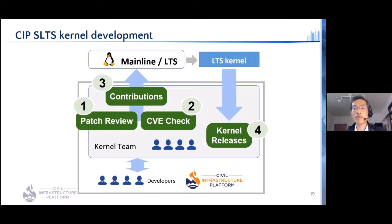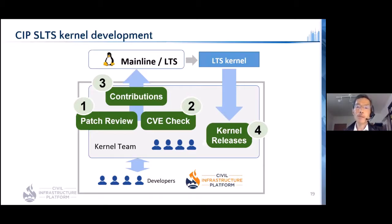For that objective, the team monitors stable releases carefully and contributes to them where needed. In general, patches are committed to mainline first, then backported to each stable kernel. However, for some reason, such backporting might not be done on specific stable kernels — it may be because patches are irrelevant or because backporting is non-trivial due to implementation changes. The CIP kernel team reviews those patch statuses, and if patches should be backported, the team contributes them. Security patches are also checked using open source tools, and if patches are missing in stable releases, the team contributes those as well.